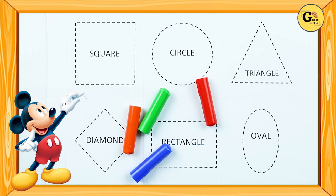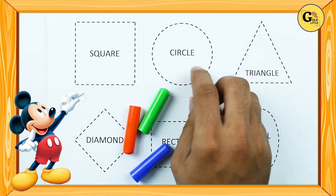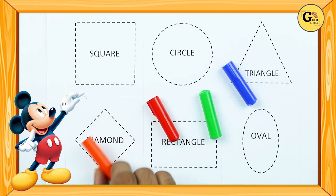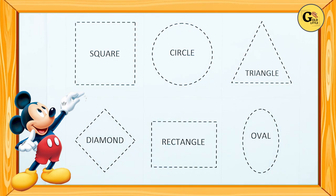Hello friends, today we learn shapes: square, circle, triangle, diamond, rectangle, oval with colors: red color, blue color, orange color, green color. Let's start.